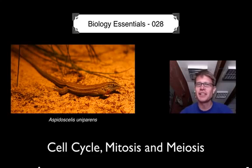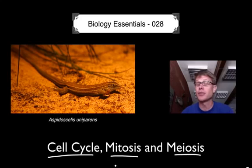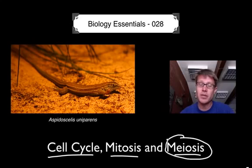Hi, it's Mr. Andersen. Welcome to biology essentials video 28. This is on the cell cycle, mitosis and meiosis. In other words, how we go from one cell to all the cells, the trillions of cells inside our body. Meiosis is important because that's how we make sex cells.